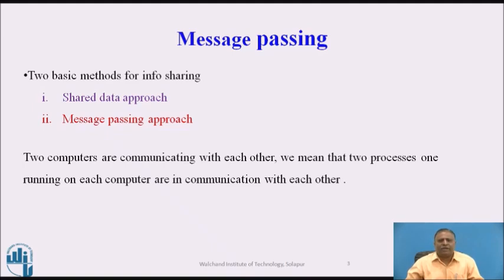A process is a program in execution. When two computers communicate with each other, we mean that two processes running on each computer are in communication. Each computer of a distributed system may have a resource manager process to monitor the current status of its local resources, and the resource managers of all computers might communicate with each other to dynamically balance the system load. Therefore, a distributed operating system needs to provide inter-process mechanisms to facilitate such communication activities.